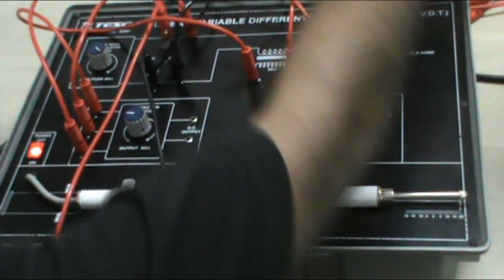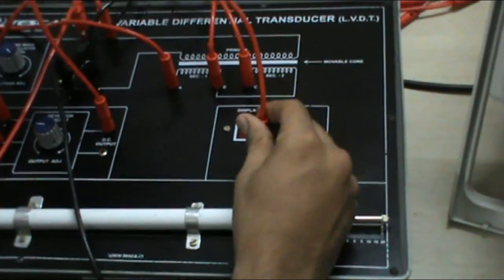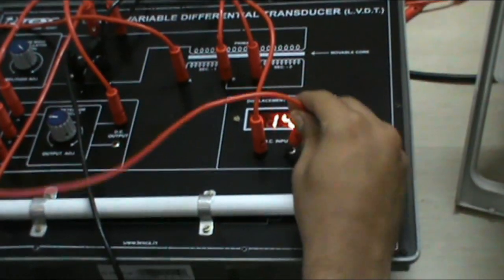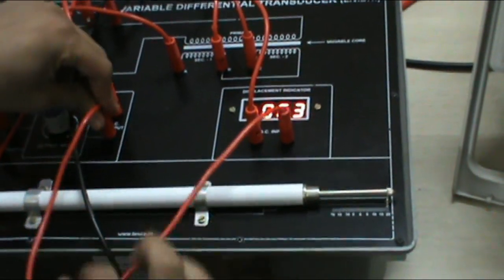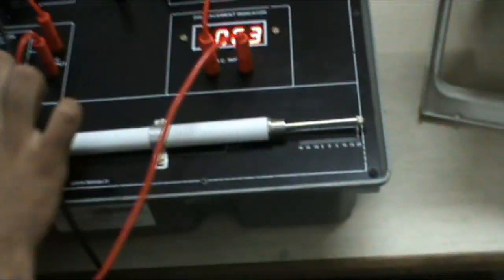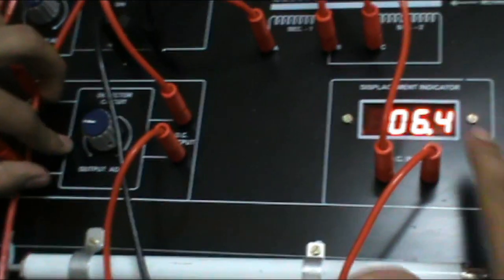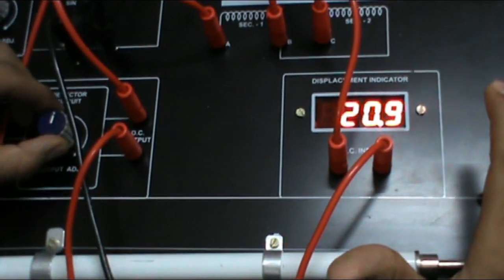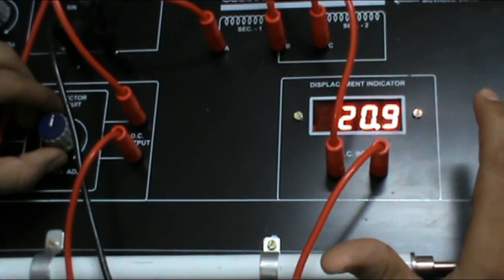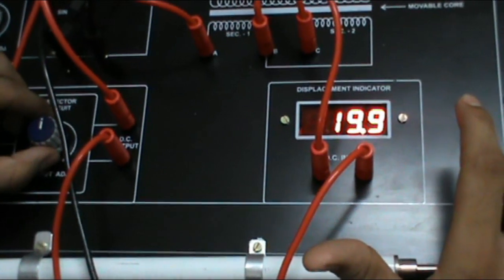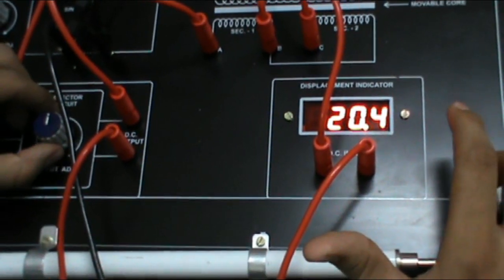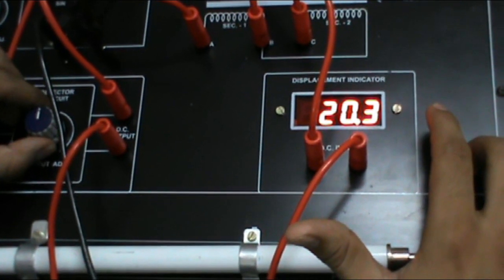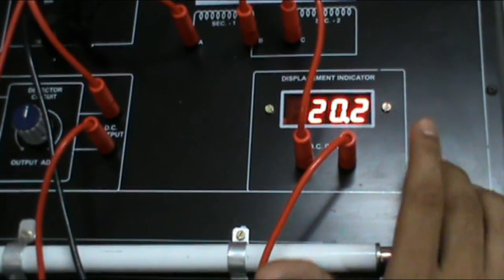And connect the DC output of the detector circuit to displacement indicator LCD. Before seeing the output, first of all calibrate the detector circuit so that it shows 20mm in the displacement indicator. It is approximately 20mm.